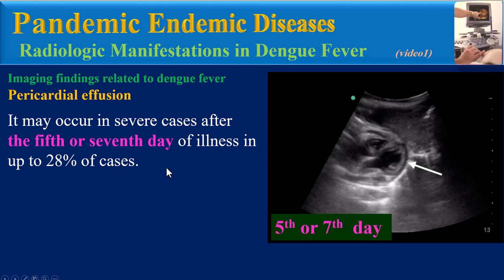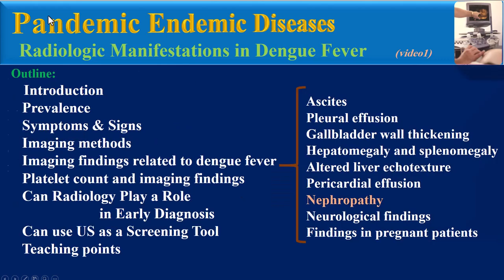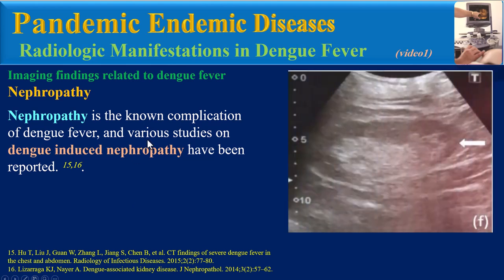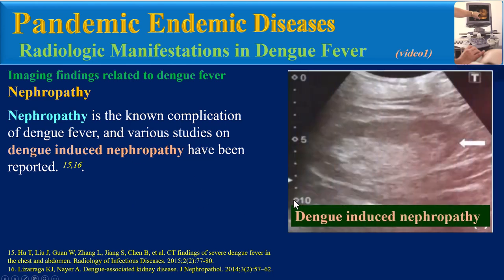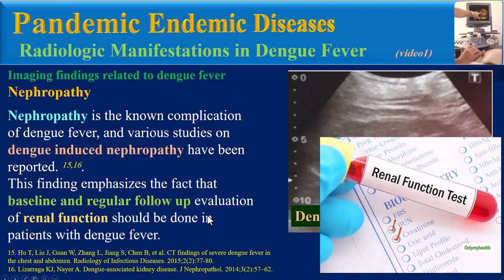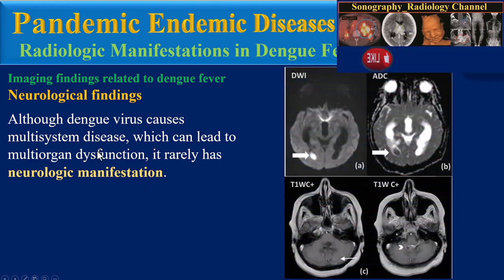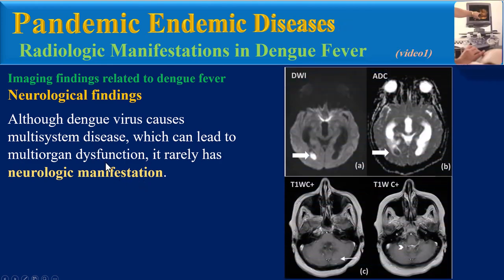Pericardial effusion may occur in severe cases after the fifth or seventh day of illness, in up to 28% of cases. Its sonographic characteristic is a simple anechoic effusion. Nephropathy is a known complication of dengue fever; increased parenchymal echogenicity of the kidney on ultrasound suggests nephropathy. This finding emphasizes that baseline and regular follow-up evaluation of renal function should be performed in patients with dengue fever.